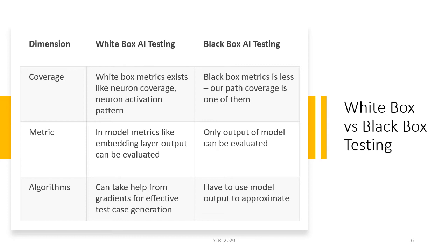Algorithms also differ for white box and black box models. For white box models, gradient-based algorithms can be used for effective test case generation. For black box models, we have to approximate the model to figure out how to generate test cases that might fail. For this talk, we focus only on black box AI testing. Defining AI testing techniques for black box models makes them model-agnostic, meaning they are applicable for various kinds of models, allowing a single AI testing technique to cover many models.